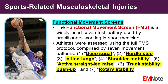The Functional Movement Screen (FMS) is a widely used 7-test battery used by practitioners working in sport medicine. Athletes are assessed using the full FMS protocol, comprised of 7 movement patterns: 1. Deep squat, 2. Hurdle step, 3. Inline lunge, 4. Shoulder mobility, 5. Active straight leg raise, 6. Trunk stability push-up, and 7. Rotary stability.